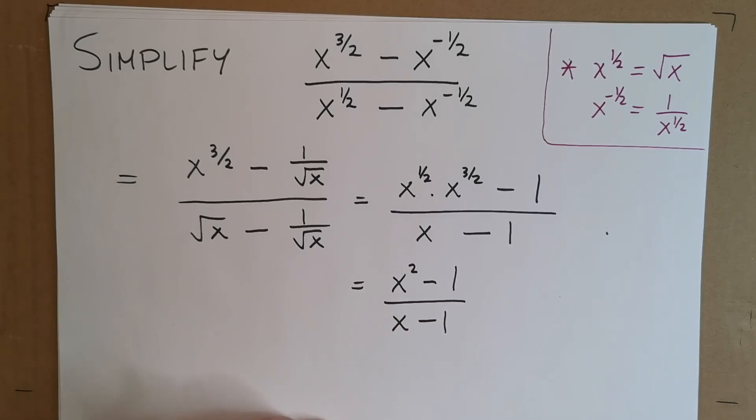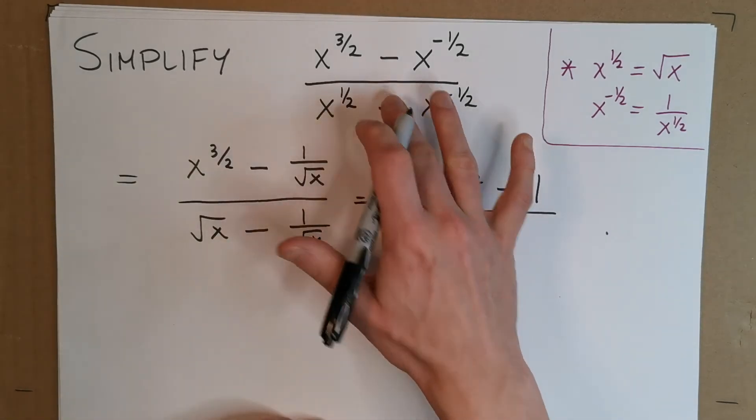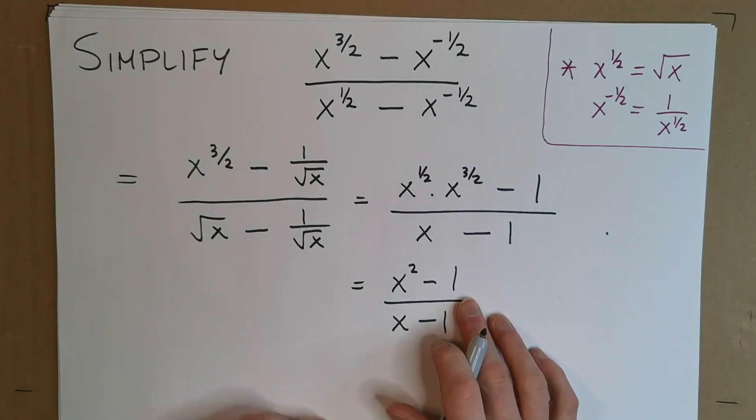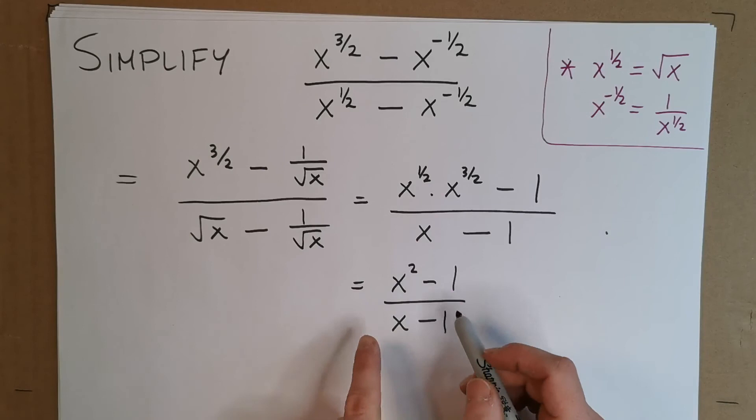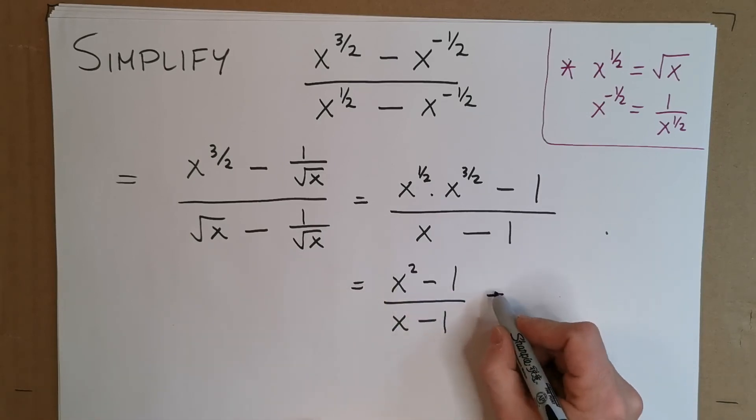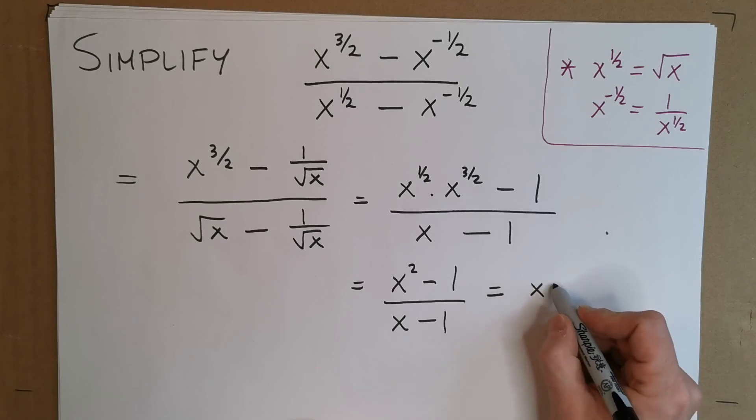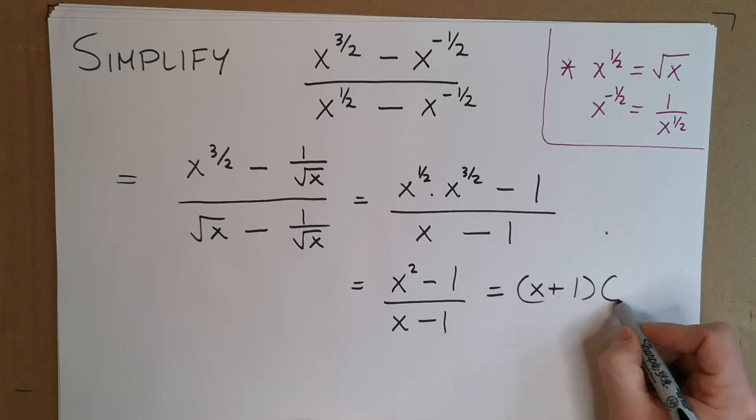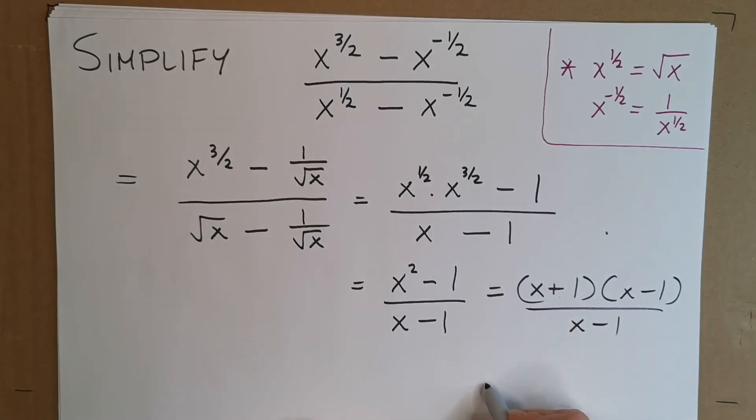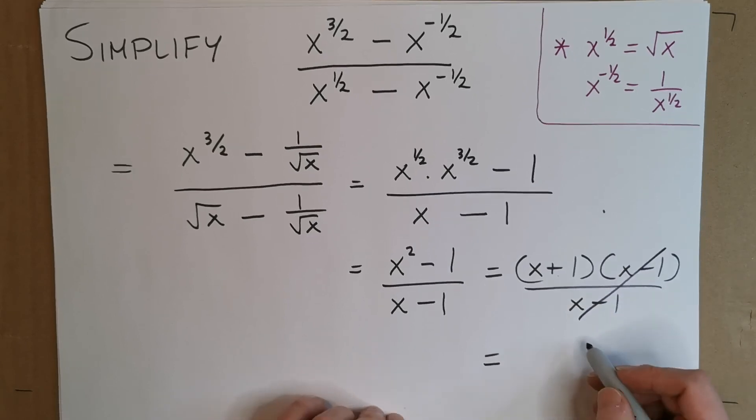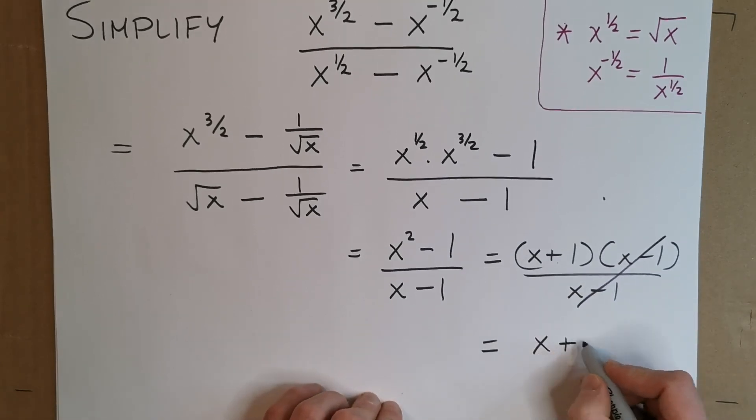Now, while it already now looks a bit simpler than the very start, we're still not finished. A glaring thing for you in the Leaving Cert, you have to always recognise this, is they love throwing in the difference of two squares, which is what we have in the top. So this actually is x plus 1, and x minus 1, all over the x minus 1. And of course, these are multiplying these two factors, which means this will cancel, and we're just left with a nice and neat x plus 1.